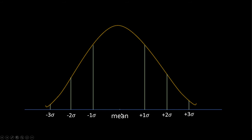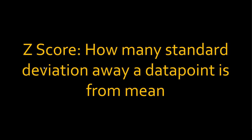Now let's talk about z-score. If you know standard deviation, you already know z-score — it's the same concept with a little tweak. In the bell curve, at plus two standard deviations the z-score for that data point is 2. If a data point is between two and three standard deviations, say 2.5, then the z-score is 2.5. Similarly, a data point between minus one and minus two standard deviations has a z-score of minus 1.5. Z-score is simply how many standard deviations away your data point is from the mean.